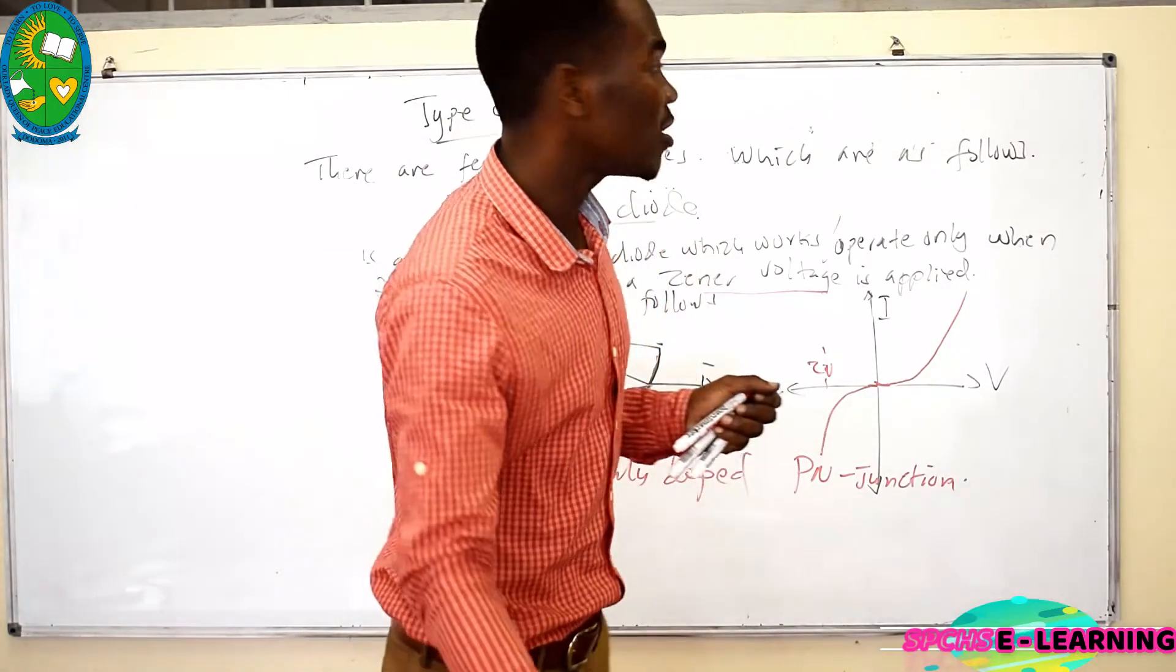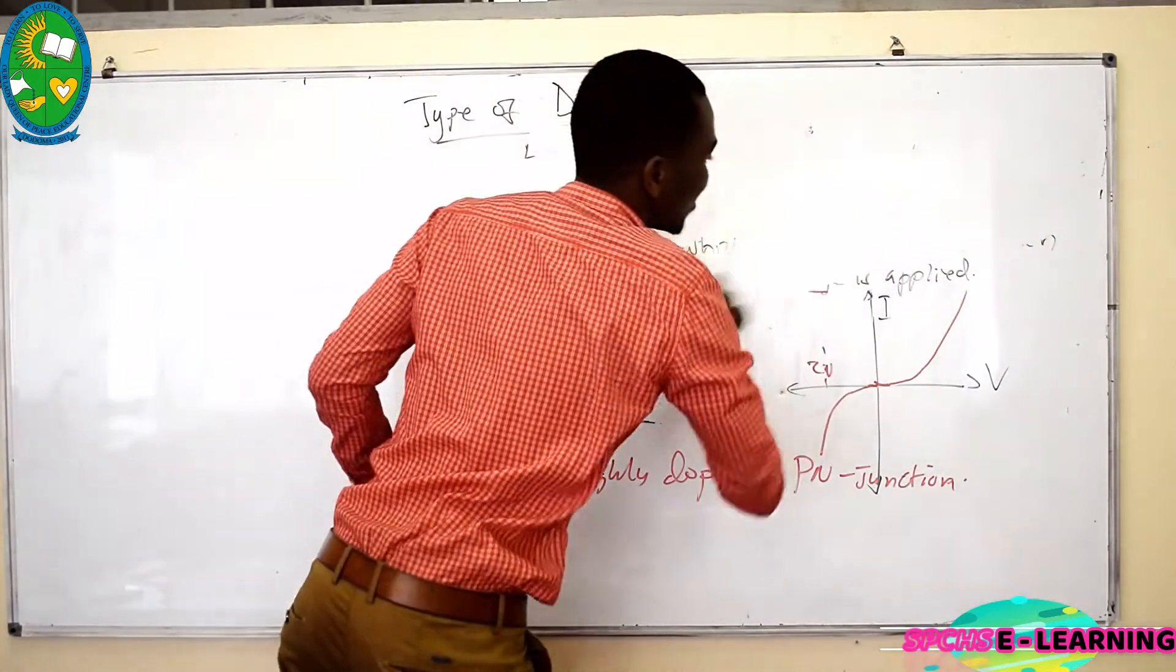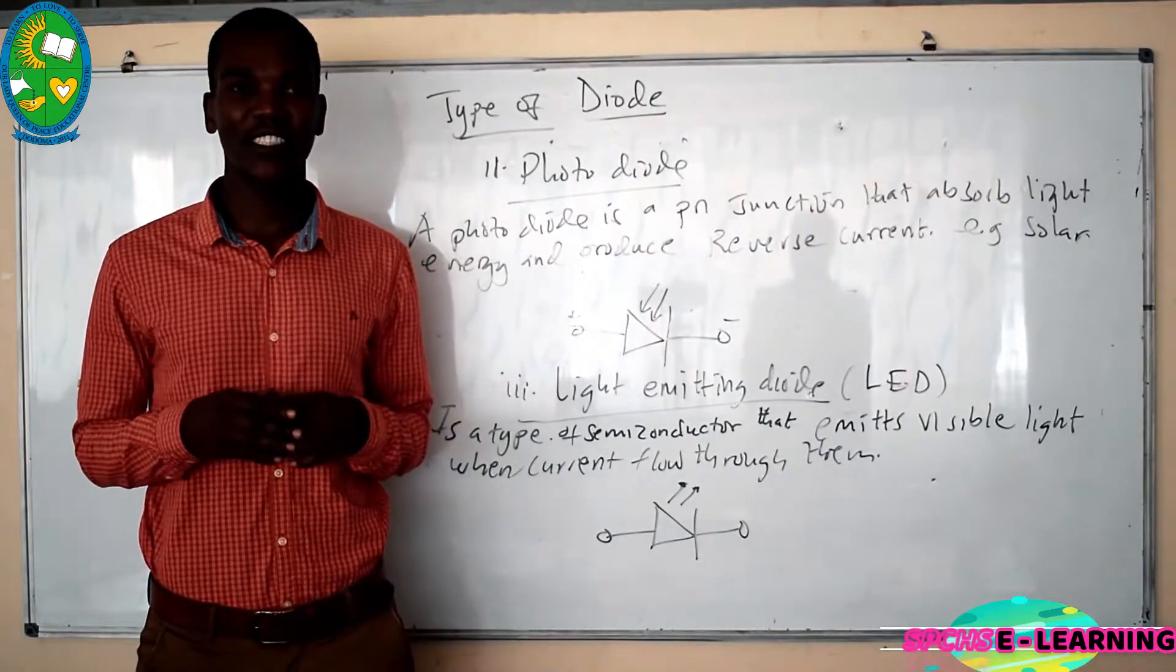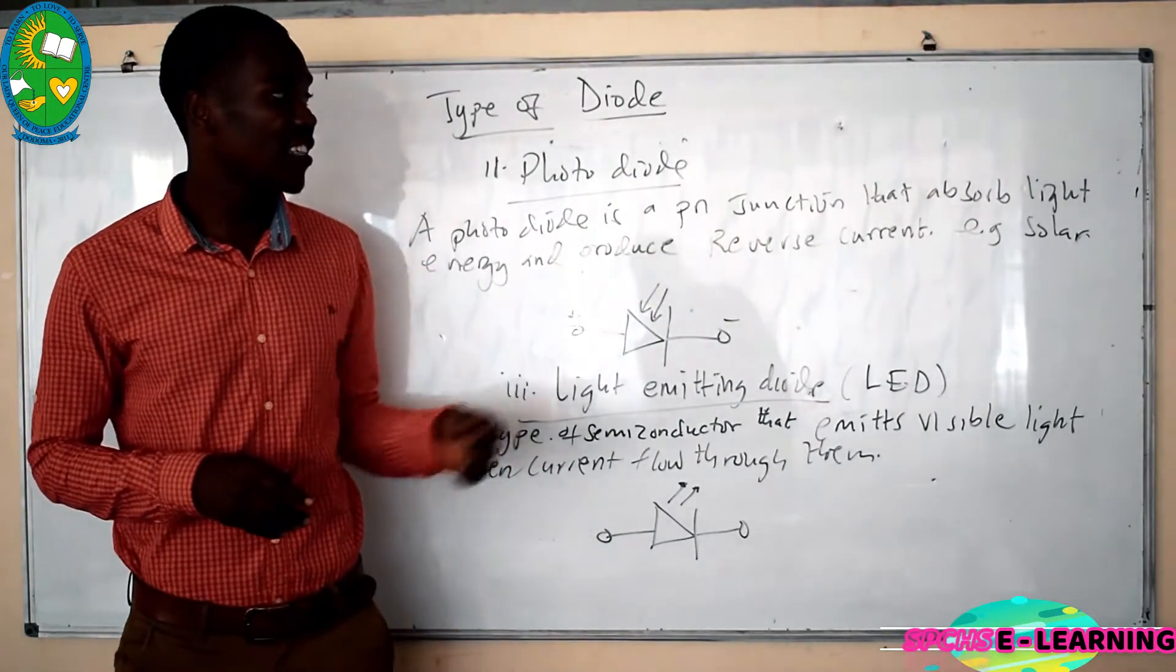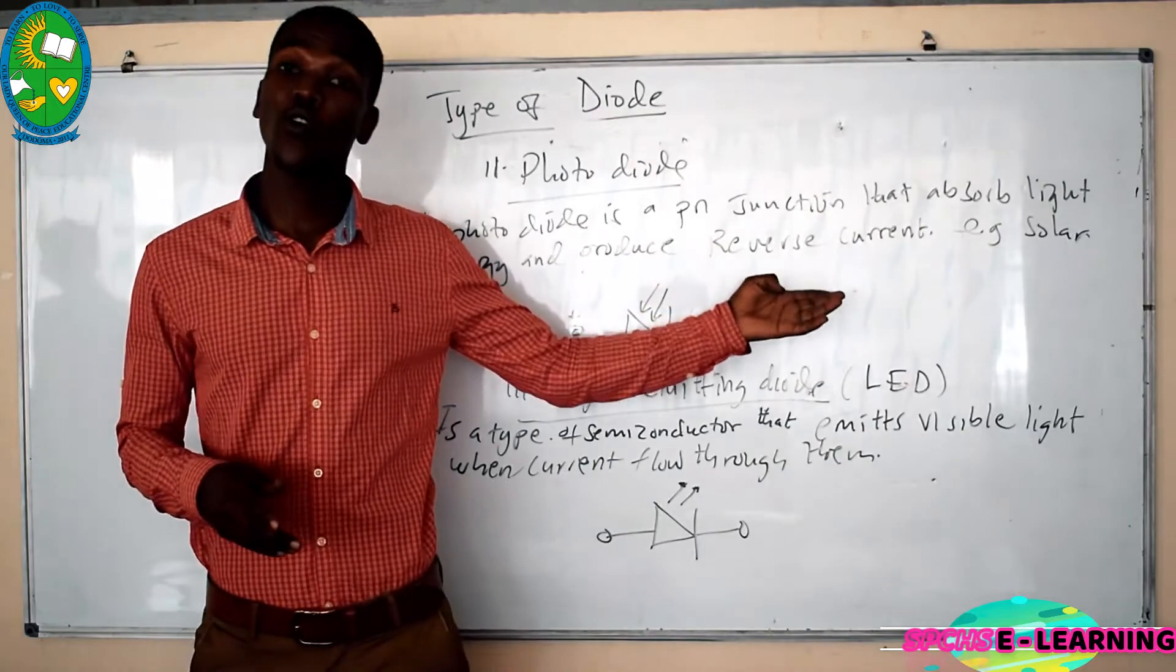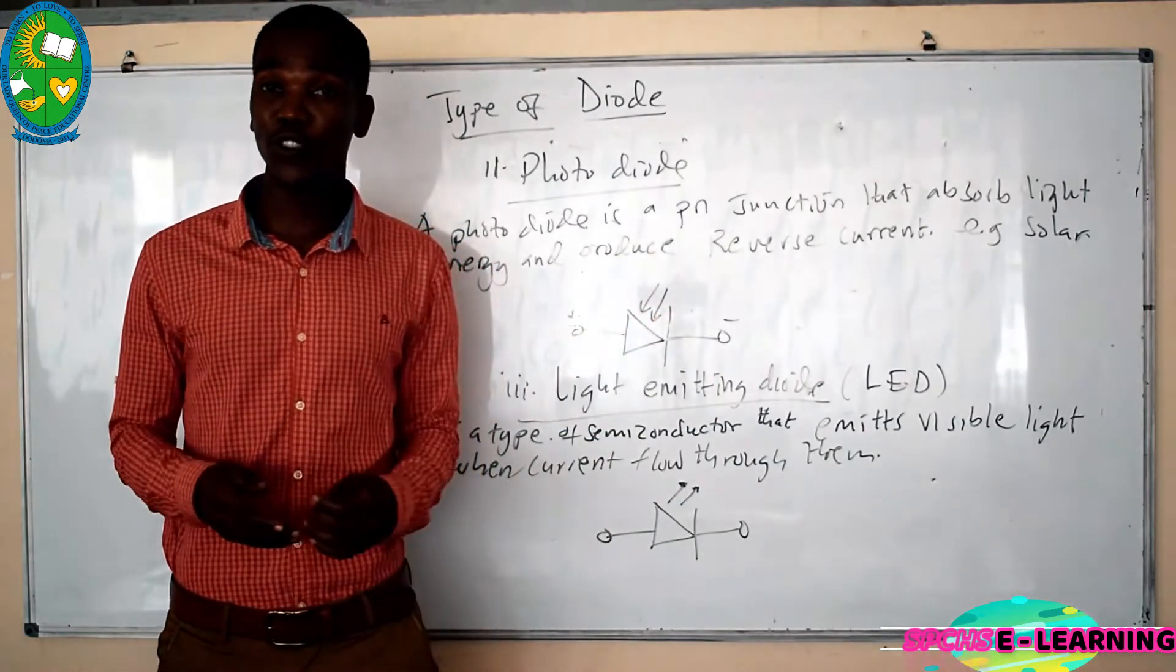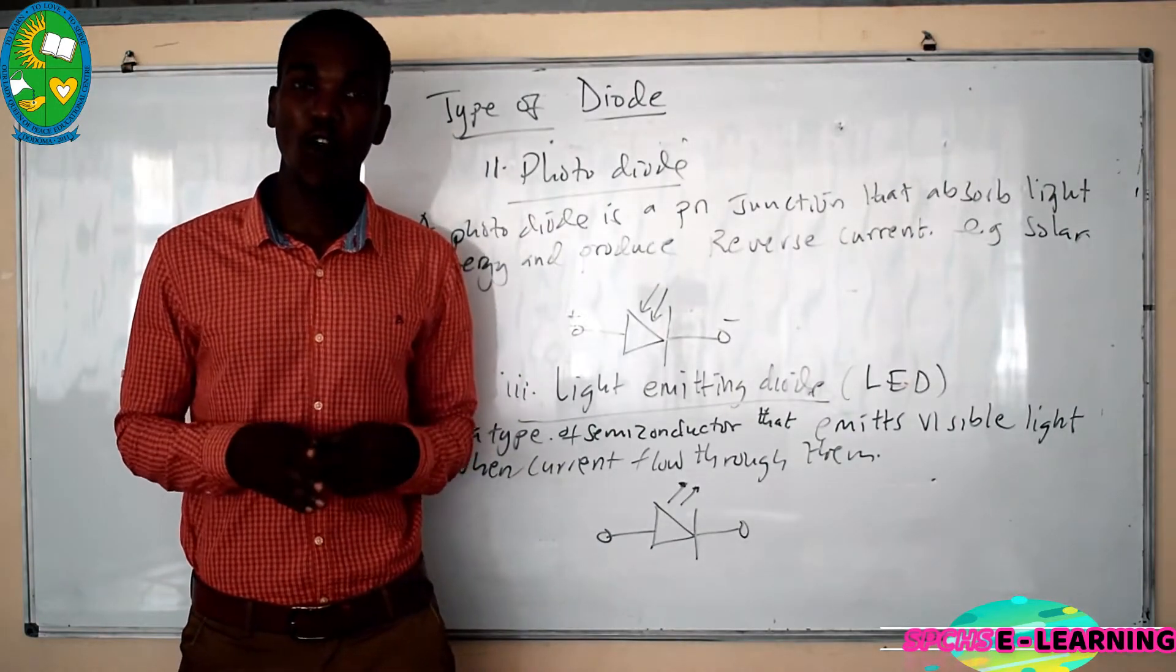The second type of diode is a photodiode. A photodiode is a PN junction that absorbs light energy and converts it into a reverse current. These reverse currents flow on the same circuit which is connected in it. That's why it can be used in a solar panel as a source of electricity.